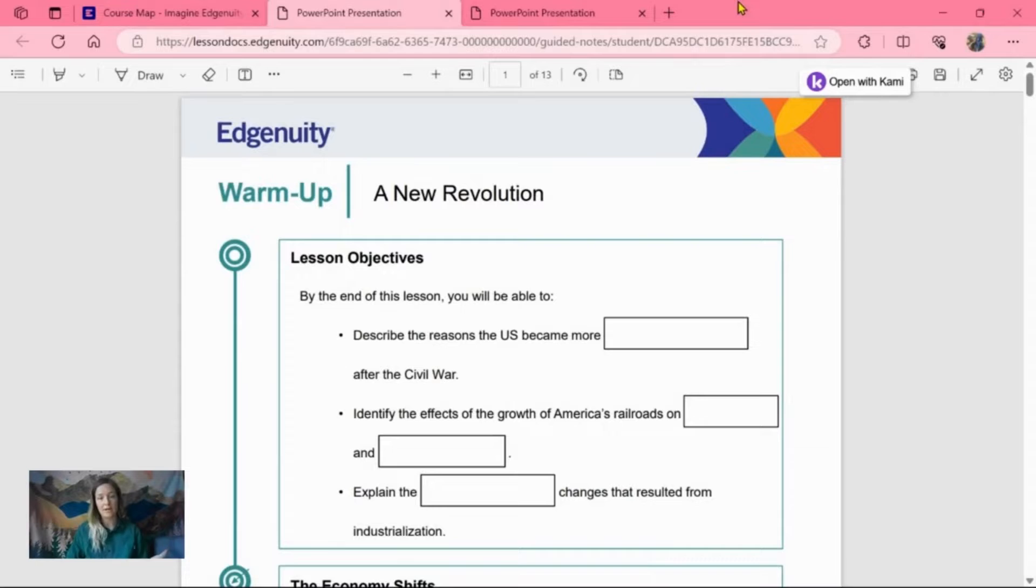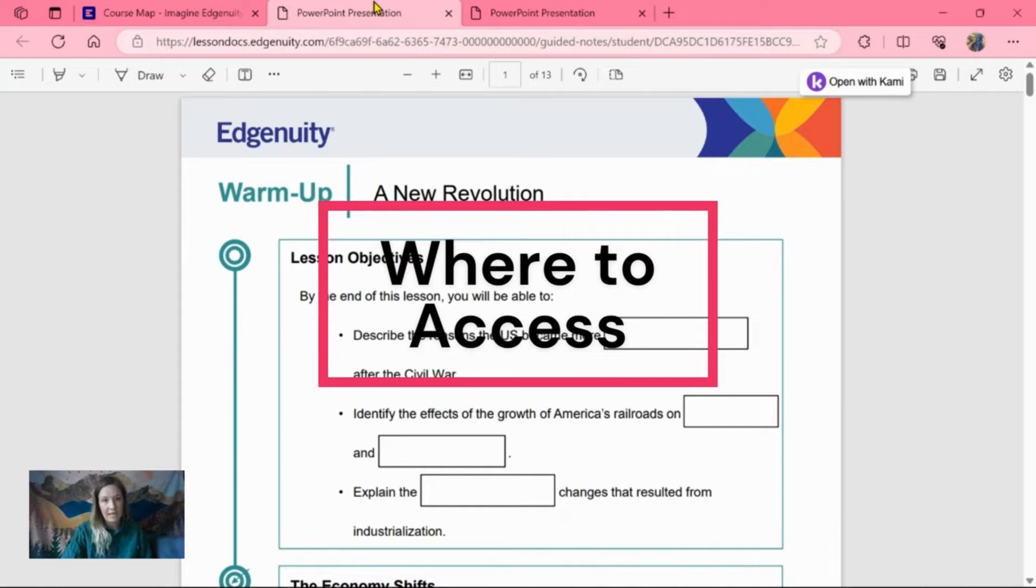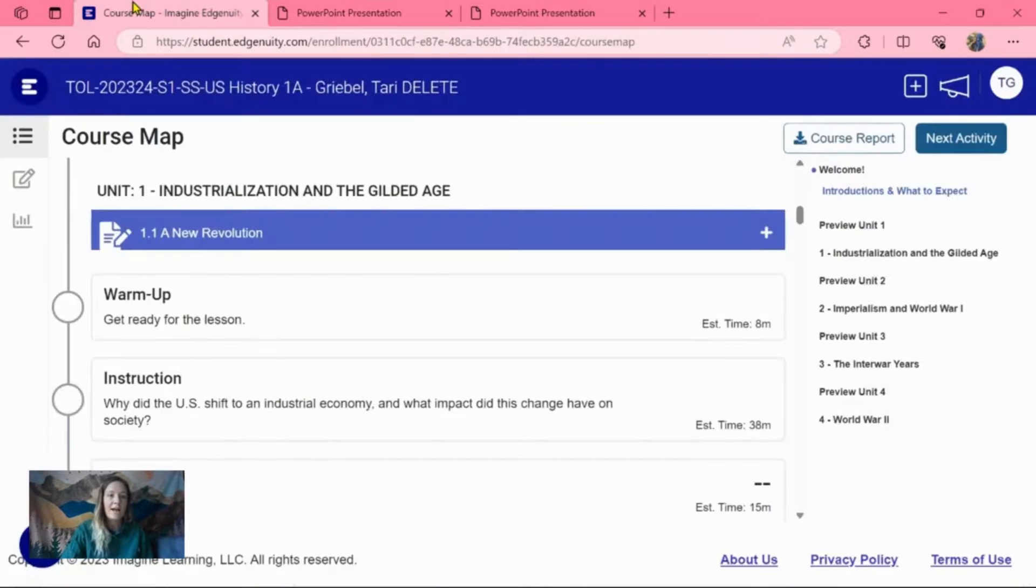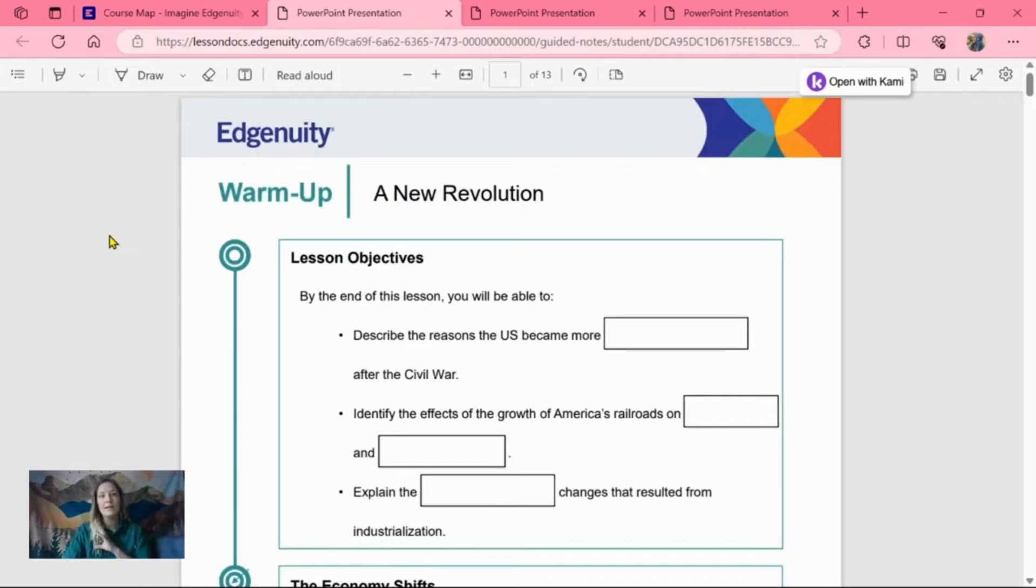All right, you've decided if you're going to use the blank guided notes or the filled out guided notes. Now I'm going to show you where to go to access these. Let's start first with the blank guided notes. When you're at your Edgenuity course map, so I've clicked into U.S. History, this is our course, you're going to see blue bars that are the title of each instruction or each lesson. Next to the title is a symbol for the guided notes. When you click that, it'll open up a separate tab. This is a PDF of the guided notes. These are always going to be blank when you access them this way.